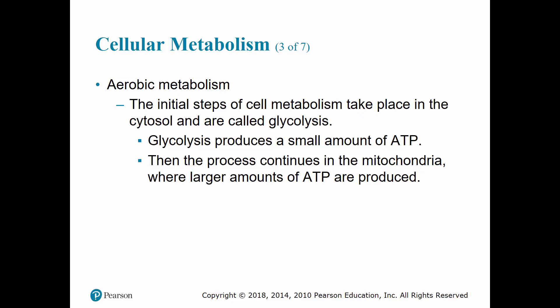Cells must engage in metabolism to produce the energy needed to carry out their functions. When there is an adequate amount of oxygen available to the cell, it produces a greater amount of energy, and the body is able to convert waste products to forms that the body can then eliminate safely. The initial steps of metabolism take place in the cytosol and it's called glycolysis. During glycolysis, a small amount of ATP is produced, and as it continues through the mitochondria, a larger amount of ATP is produced.